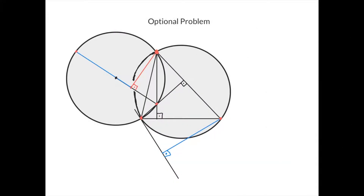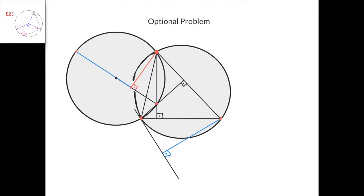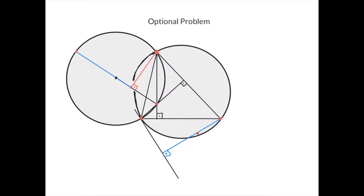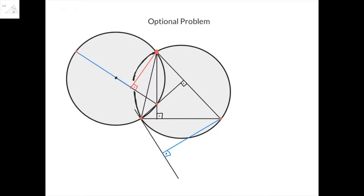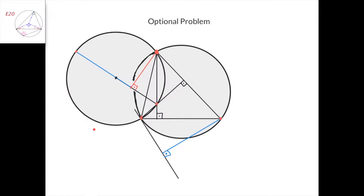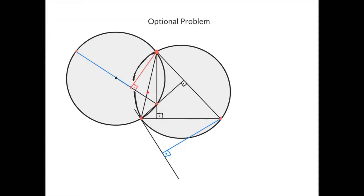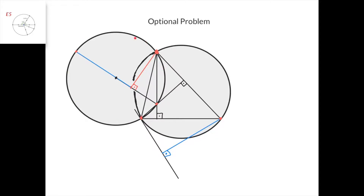This is the optional problem. We have a triangle, this is its circumcircle, this is a line tangent to the circumcircle at this point, and this here is an altitude from this point to this line. This is the orthocenter of the triangle, and this is the circumcircle of this triangle. This is the center of this circle, and this is the diameter from this point to its diametrically opposite point here.